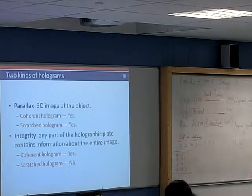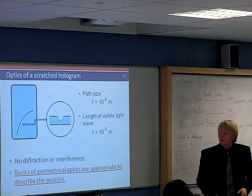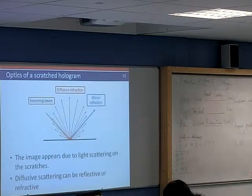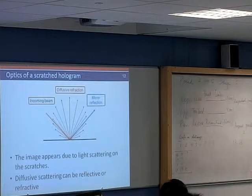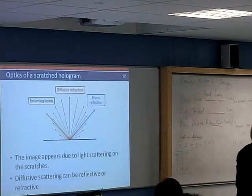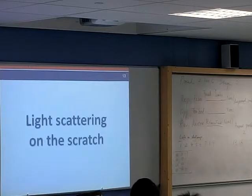Also, besides the differences, our scratch hologram has its own specialities. The first speciality is that we get no diffraction or interference phenomenon in this case because the size of the scratch is much greater than the wavelength of visible light. The second speciality is that the image appears due to the diffusive scattering of light on the surface. Therefore, let's take a detailed look at this principle.